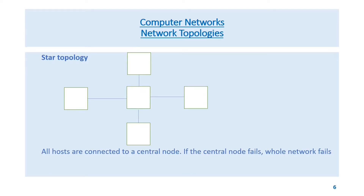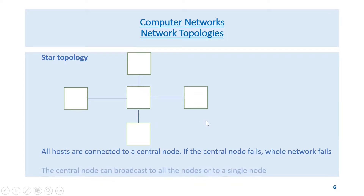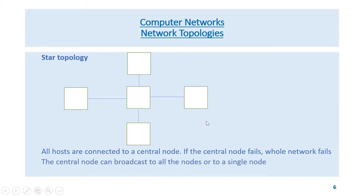In star topology, all hosts are connected to a central node. If the central node fails, the whole network fails. The central node can broadcast to all nodes or to a single node.